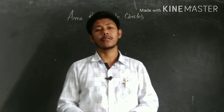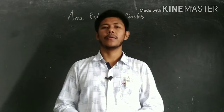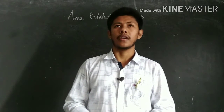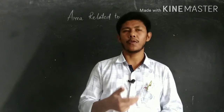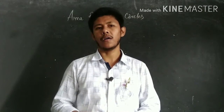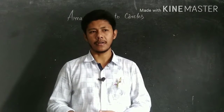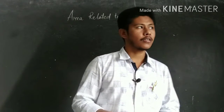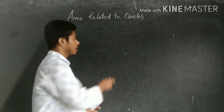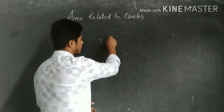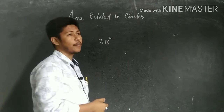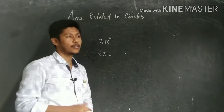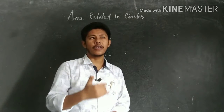Good morning students. Today we again review the chapter 'Area Related to Circles.' In this chapter, we mainly need two formulas. The area of a circle is π r squared, and the perimeter — also known as circumference — of a circle is 2π r. These are the two main formulas.